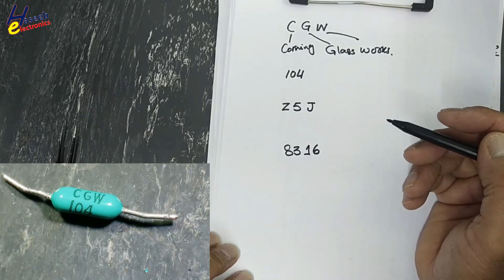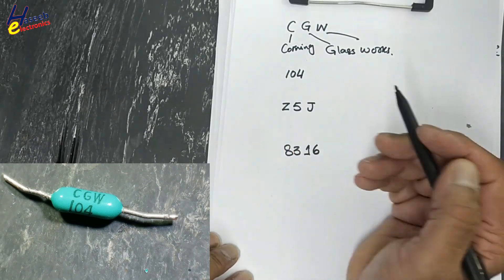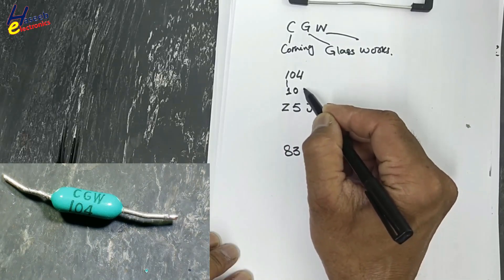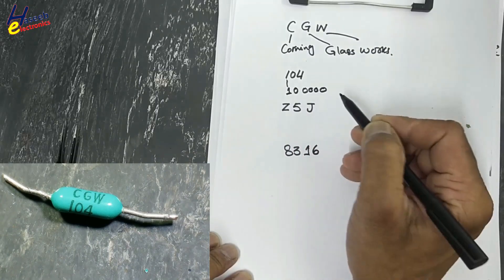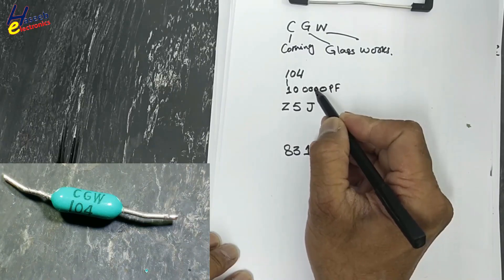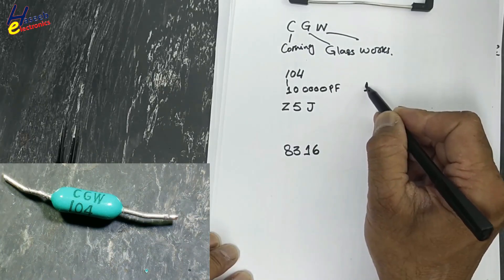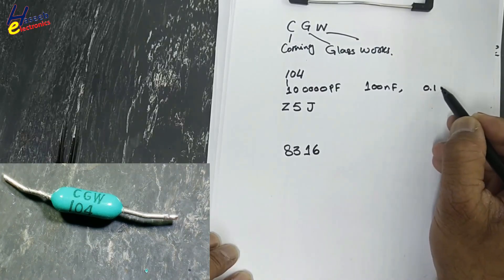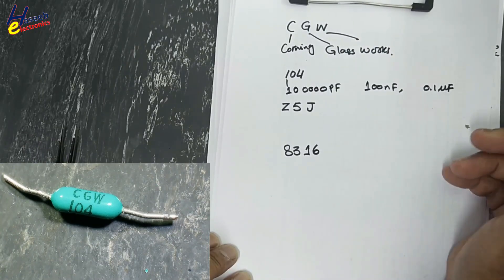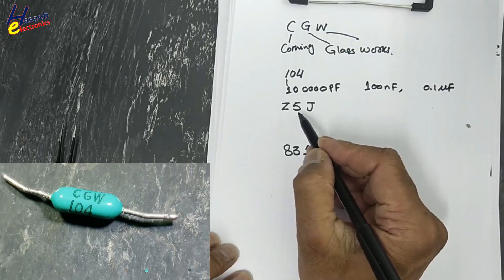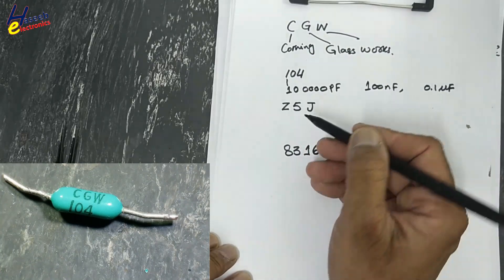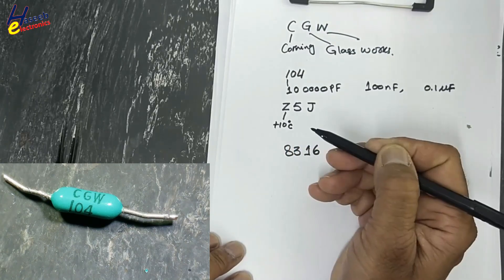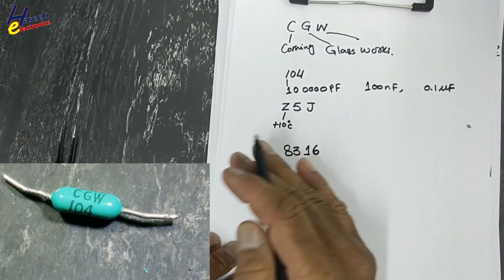Manufacturer name CGW. 104 means 10 times 10 to the power of 4 picofarad, which equals 100 nanofarad or 0.1 microfarad. Z5J - Z indicates plus 10 degree Celsius working temperature lower limit.